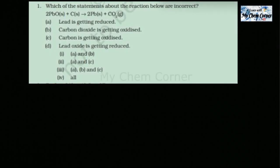Hello everyone, welcome back. Today we're starting with questions from the Class 10 NCERT book, Chapter 1: Chemical Reactions and Equations. In this chapter you'll learn about types of reactions, how products are formed, whether a reaction involves displacement, double displacement, redox reactions, and which species undergo oxidation or reduction.